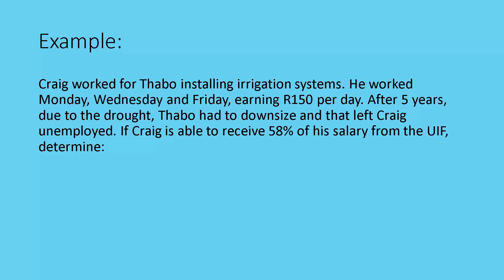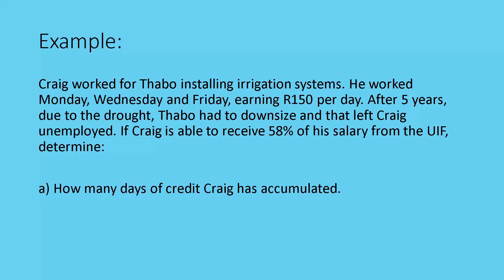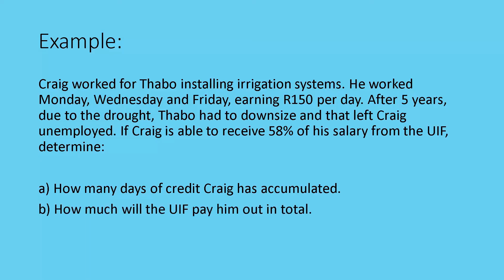After five years, due to the drought, Tabo has to downsize and Craig is left unemployed. He's able to receive 58% of his salary from the UIF due to the fact that he's worked so long. So how many days of credit has Craig accumulated, and how much will the UIF pay him out in total?